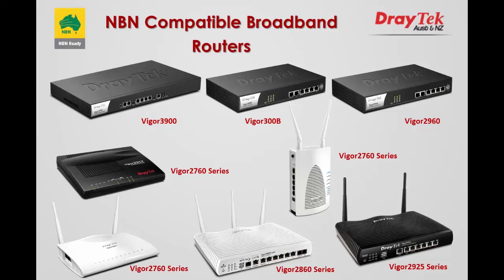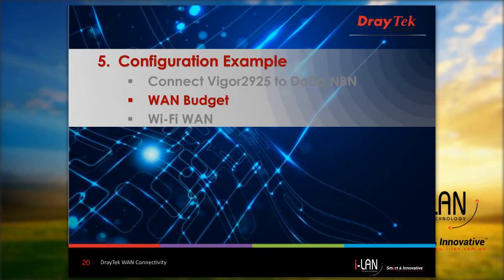It is worth noting that DrayTek has a range of NBN-ready routers which can also be used with Dodo. Now let's look at another configuration example: the WAN budget, which allows the user to limit the WAN access quota and take action accordingly when usage reaches the limit.